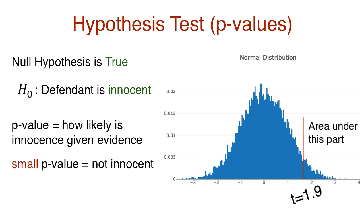So if the p-value is small, it's not likely, and so we reject the null hypothesis and treat the defendant as though he or she is guilty. If the p-value is large, we cannot reject the null hypothesis.